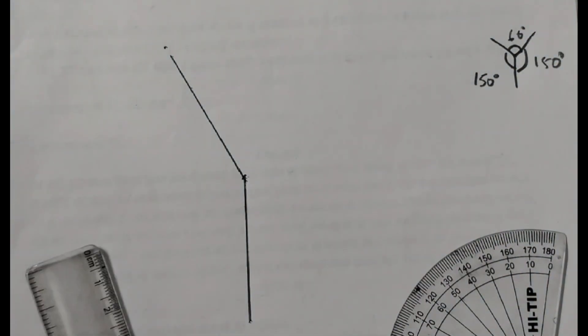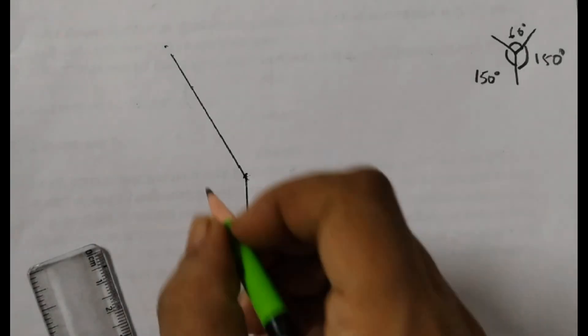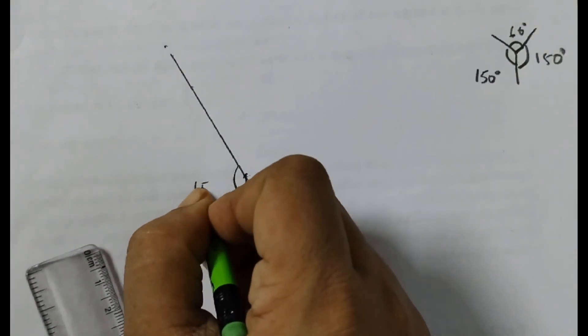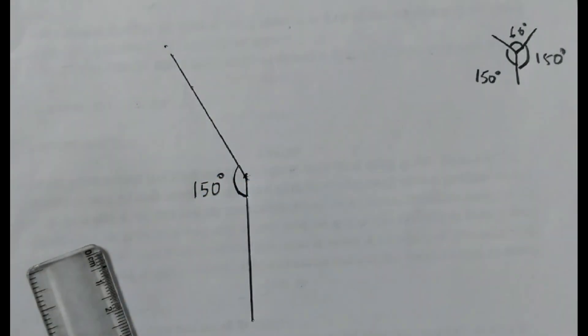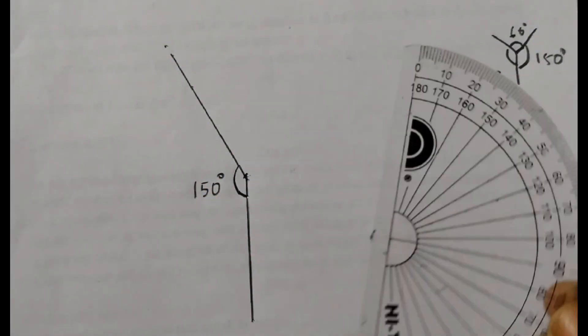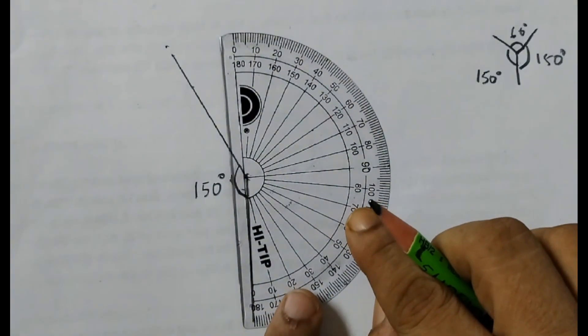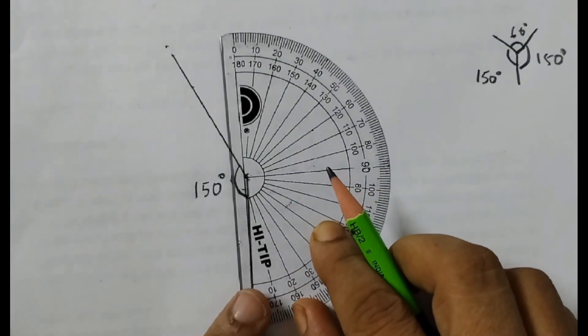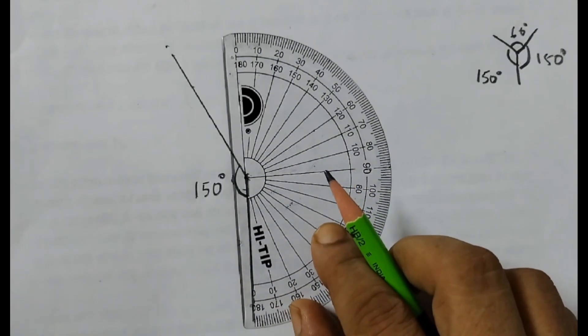Now this side again we will measure 150 degrees. This angle here is 150 degrees. Next you take the protractor, place the protractor like this. This is the vertex and this is the base line and now we will see 150 degrees from this side.